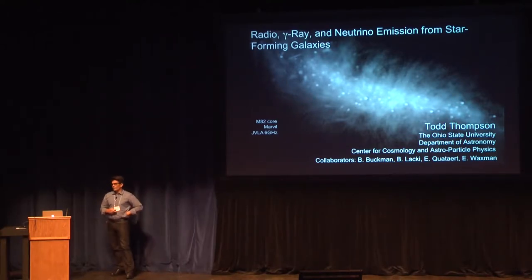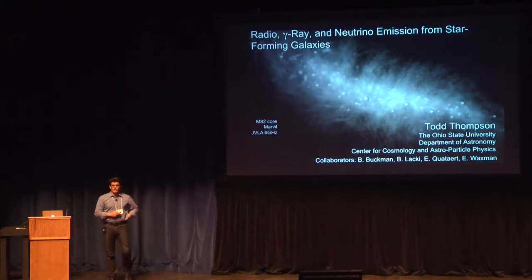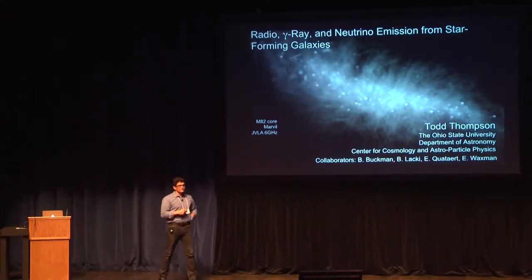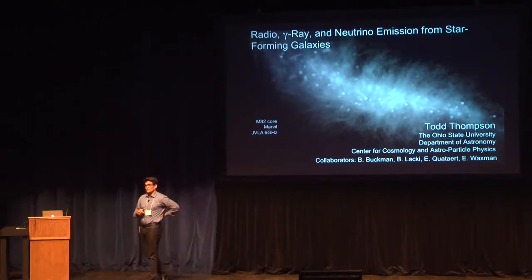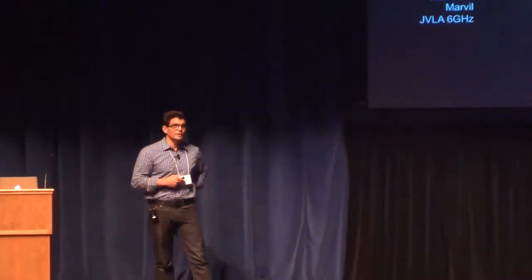The image here is M82—the core of M82—taken in six gigahertz radio emission by the JVLA. My job is to show you why the radio emission, not just its magnitude but the spectral slope, is so important to understanding the starburst and star-forming galaxy contribution to the diffuse gamma-ray and neutrino backgrounds, which this conference has dealt with in such detail.